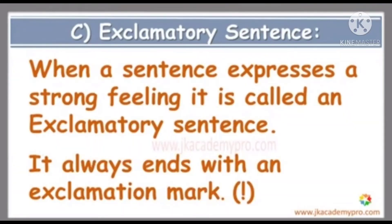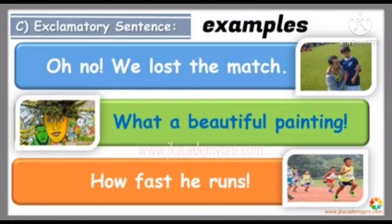Next, exclamatory sentence. When a sentence expresses a strong feeling, it is called an exclamatory sentence. It always ends with an exclamation mark. Examples of exclamatory sentence: Oh no, we lost the match! What a beautiful painting! How fast he runs!